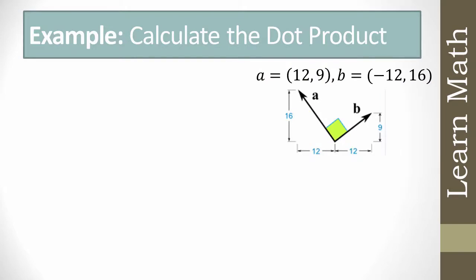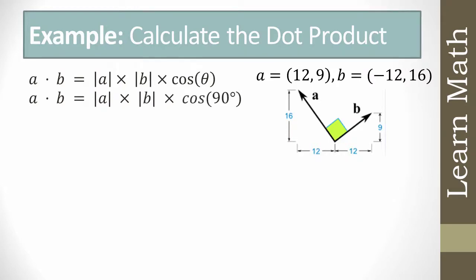Next example: calculate the dot product if vector a = (12, 9) and b = (-12, 16). Using the formula a·b = |a||b|cosθ, the angle here is 90°, and cos(90°) = 0. So anything multiplied by 0 gives a·b = 0.